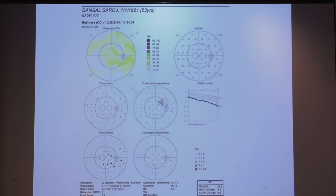This octopus printout was showing a slight field depression in the generalized field. There is no localized defect. You can see that the defect curve is just below the defined normative lines. This was done in a presbyopic patient without giving him the near addition.